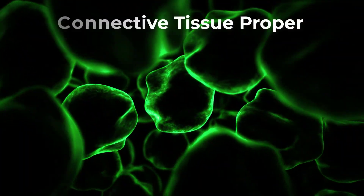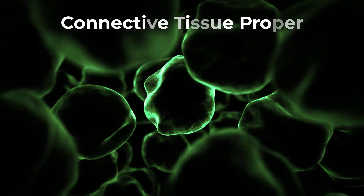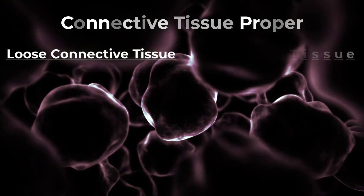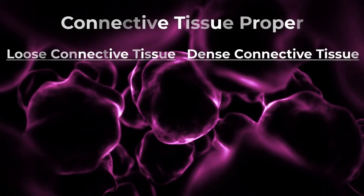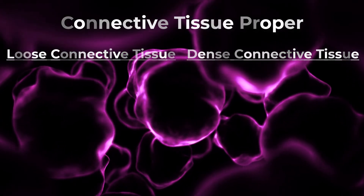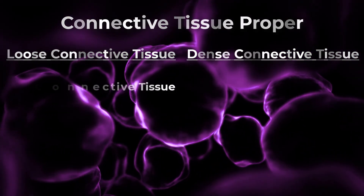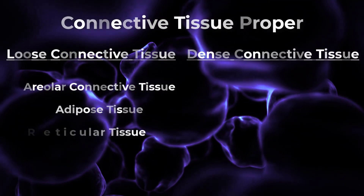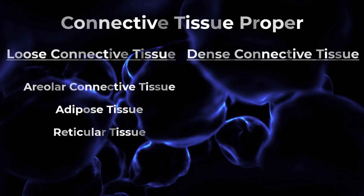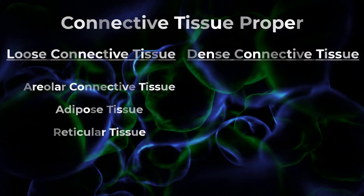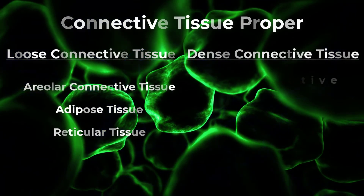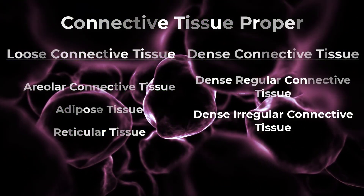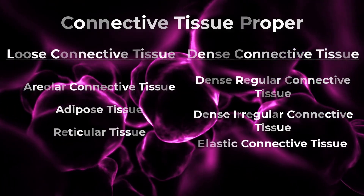The tissue types of connective tissue proper. Connective tissue proper contains tissues that fall into two different categories: loose connective tissues and dense connective tissues. There are three types of loose connective tissues: areolar connective tissue, adipose or fat tissue, and reticular tissue. The three types of dense connective tissues are dense regular connective tissue, dense irregular connective tissue, and elastic connective tissue.